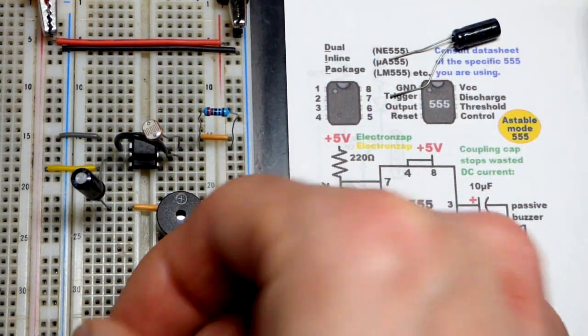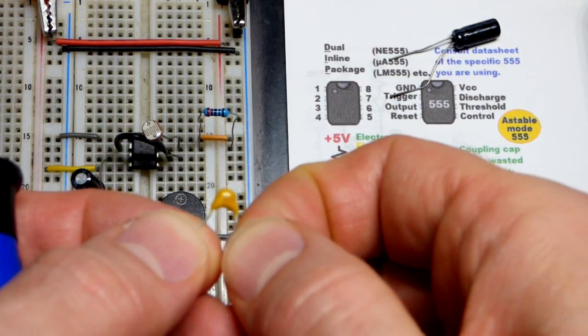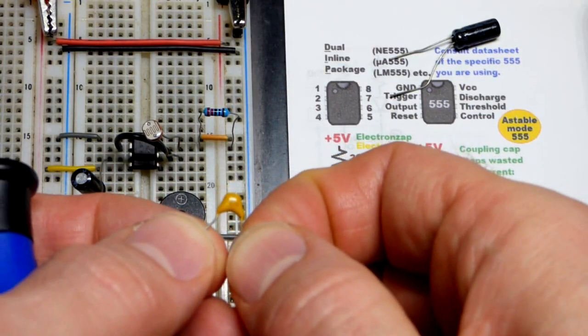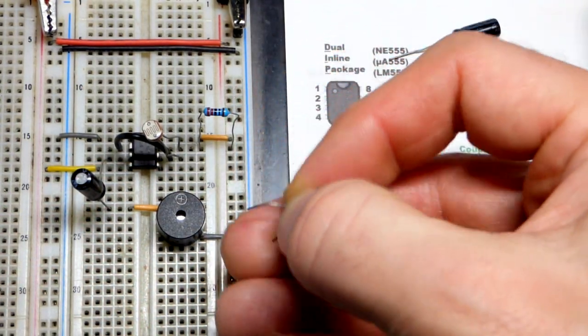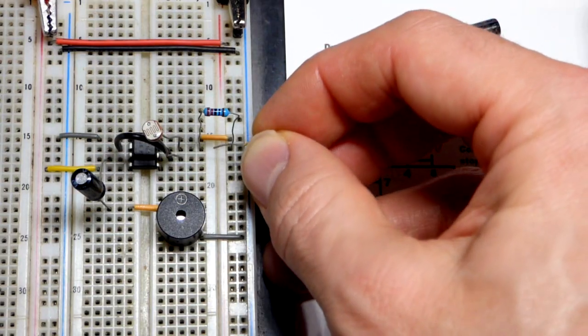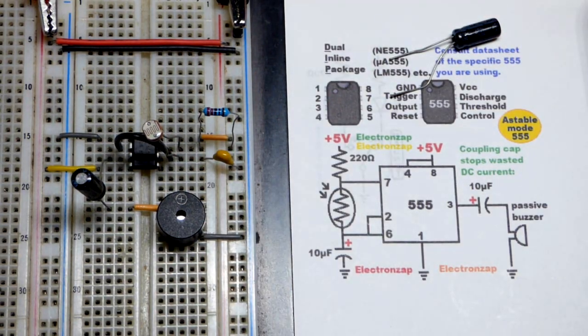Now I am going to pluck the 10 microfarad capacitor right there. This is a 474 right there, so that's 470,000 picofarad, a very small capacitor. That's the same as about half of a microfarad right there.